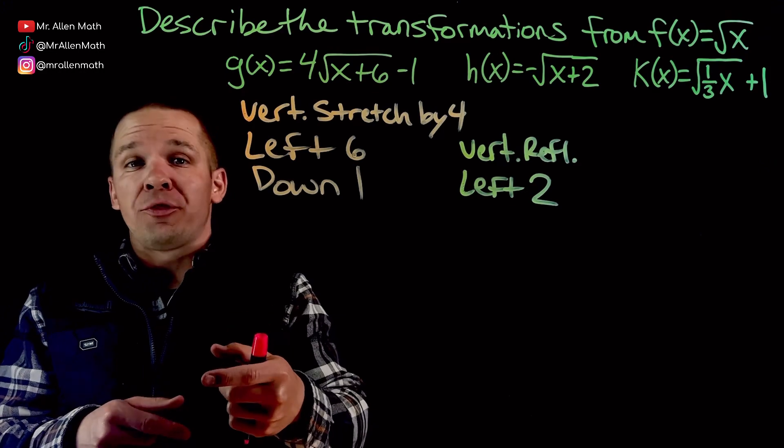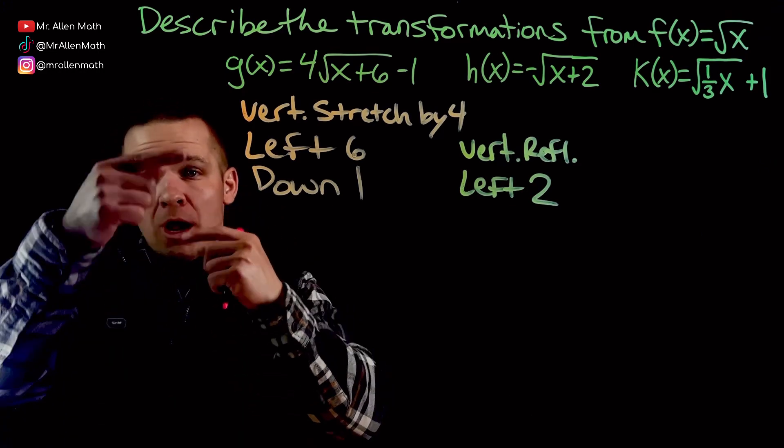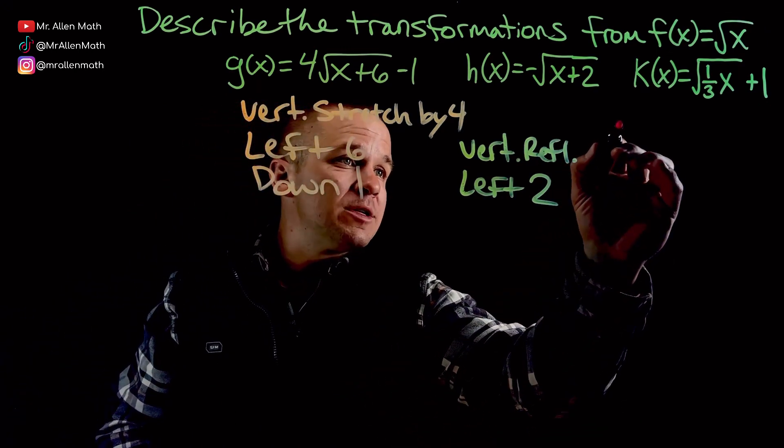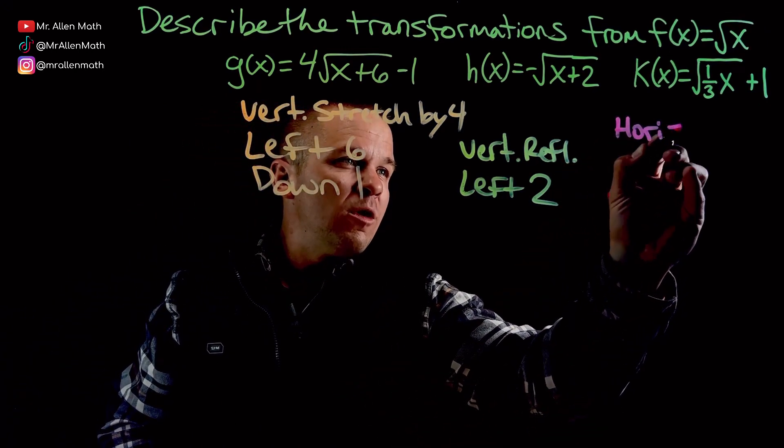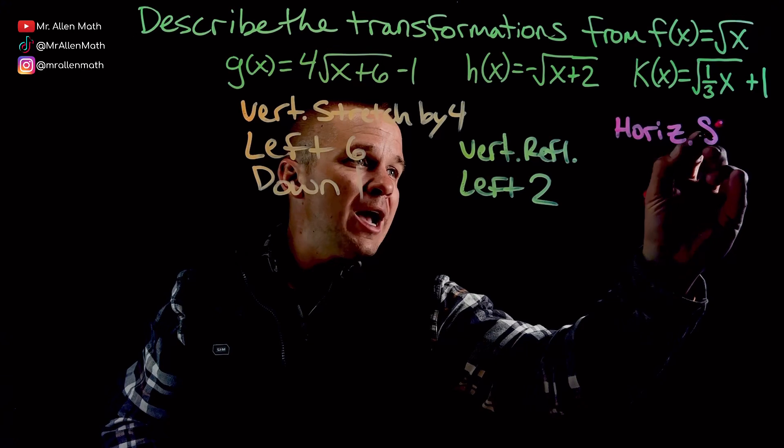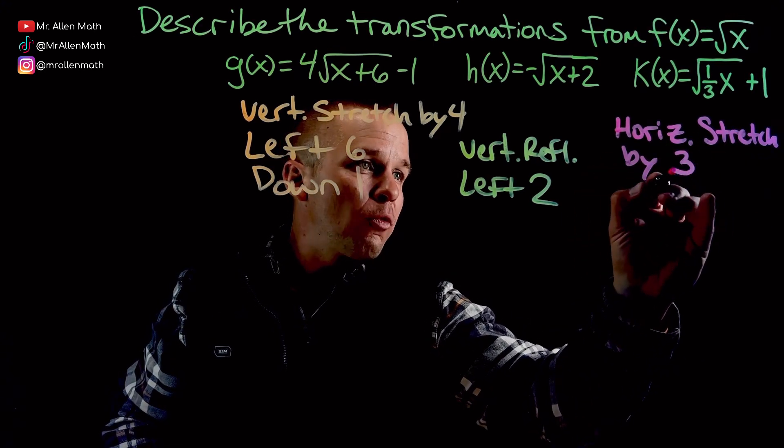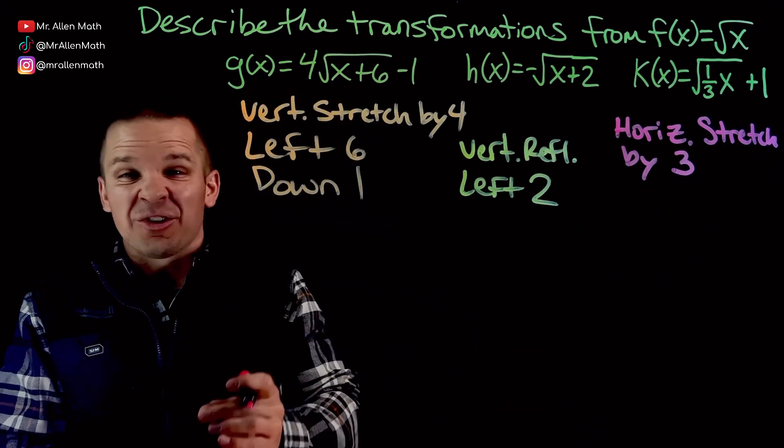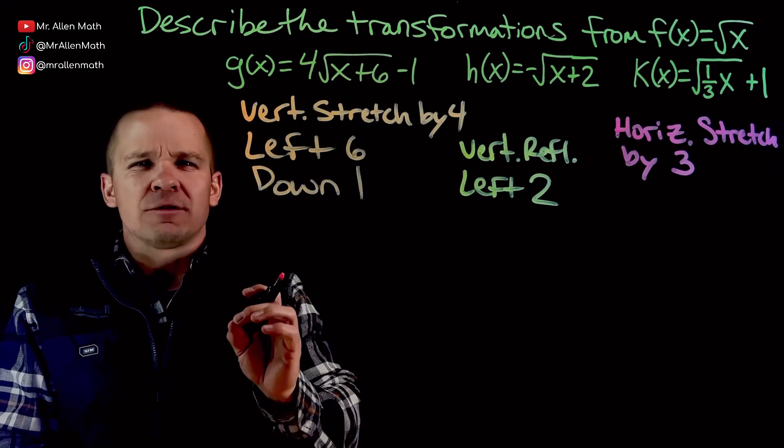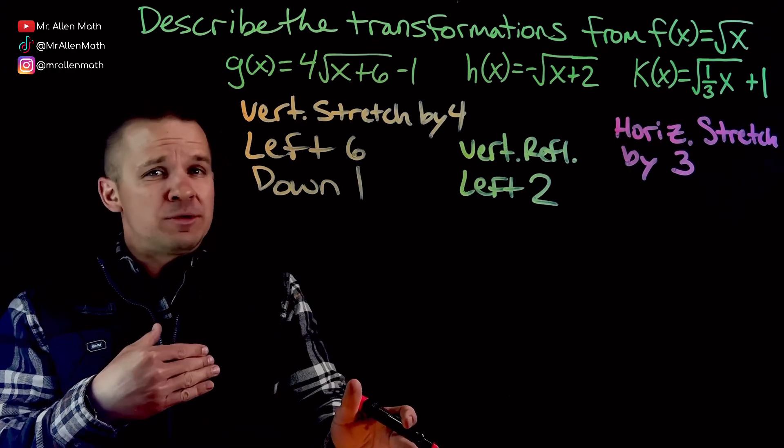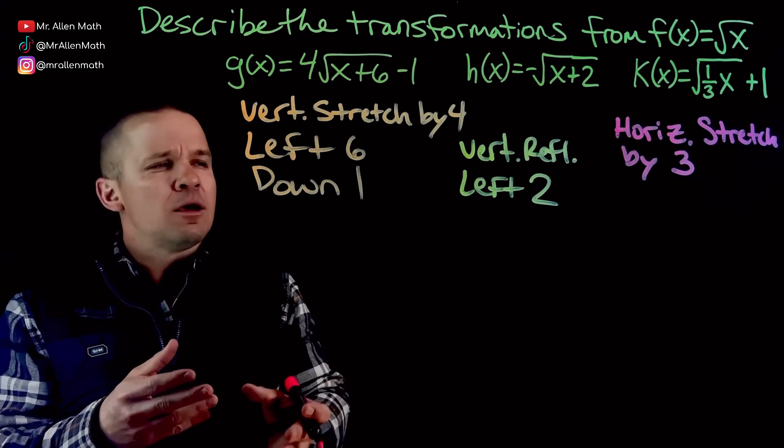So if I'm multiplying by one-third, we actually got to think about our factors being reciprocal of that, which would be 3. So this is going to be a horizontal stretch by a factor of 3. There's ways to graphically show that. I'm not going to get into that in this video. It's kind of neat.